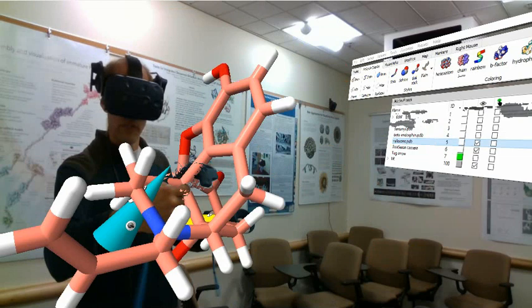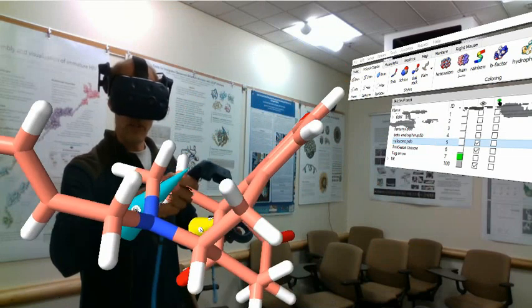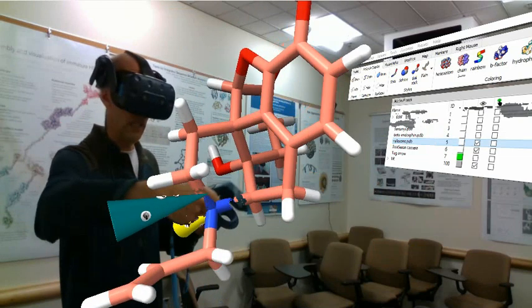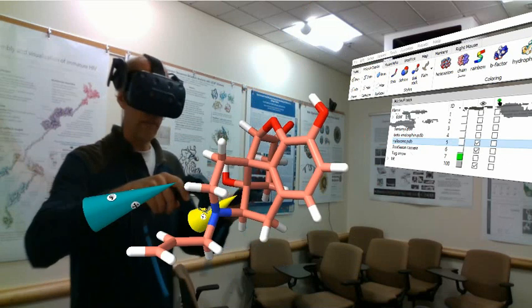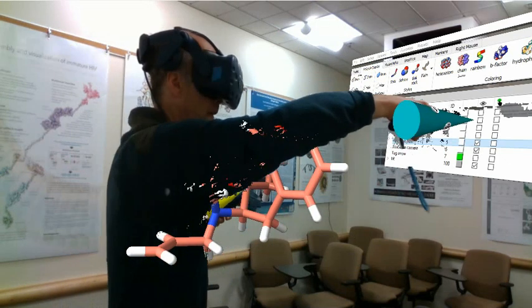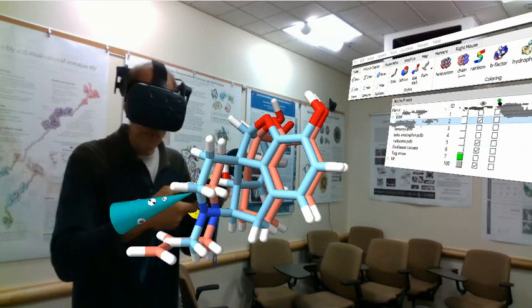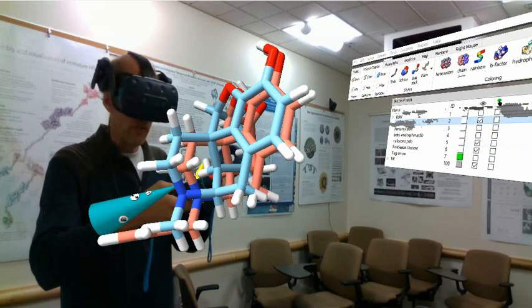And here is naloxone. And it may look very familiar to you because it's got those same five fused rings as morphine. And if we compare, let me bring back morphine. So morphine is the blue one. Naloxone is the red one.